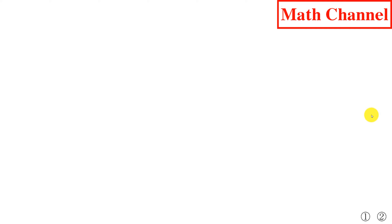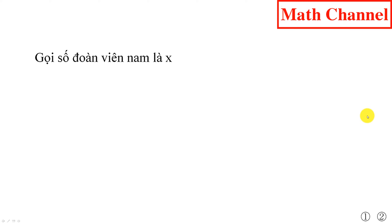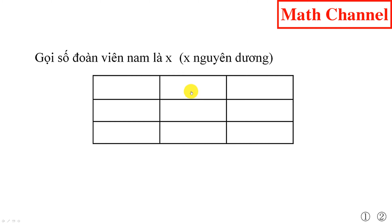Ở đây chúng ta có thể trình bày theo cách khác. Đó là chúng ta không gọi số đoàn viên nam là x, mà chúng ta gọi số đội viên nam là x, cũng với điều kiện là x nguyên dương. Khi đó giữ kiện và yêu cầu của bài toán được ghi lại ở bảng tương tự như sau.